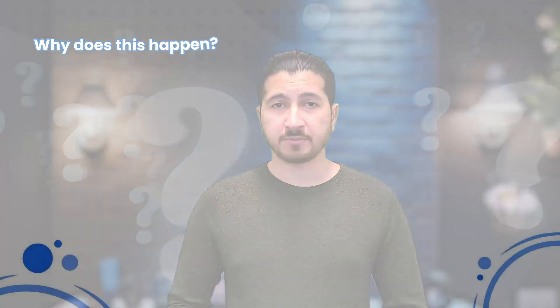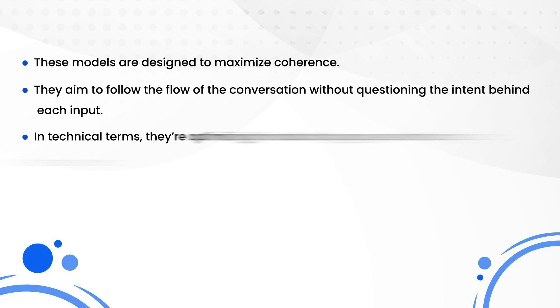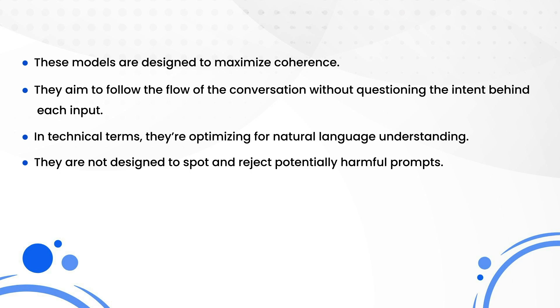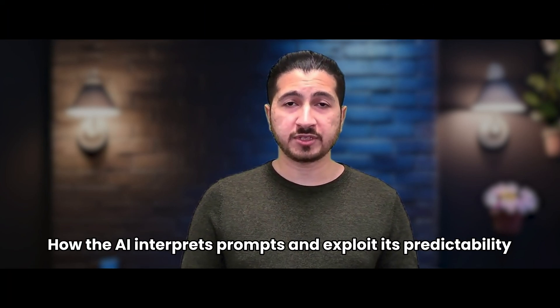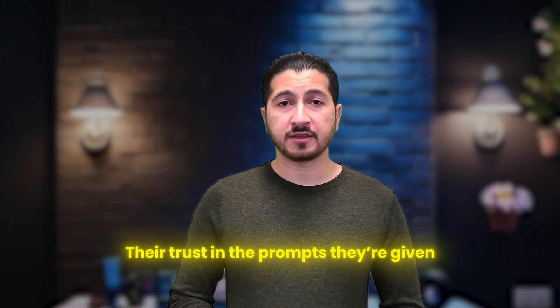Why does this happen? It's because these models are designed to maximize coherence — they aim to follow the flow of the conversation without questioning the intent behind each input. In technical terms, they're optimizing for natural language understanding, not for spotting and rejecting potentially harmful prompts. And here's where it gets even trickier: attackers don't need special tools to pull this off. They just need to understand how the AI interprets prompts and exploit its predictability. It's like finding a weak link in a strong chain and using it to break the whole system. These attacks exploit a fundamental characteristic of language models: their trust in the prompts they're given.